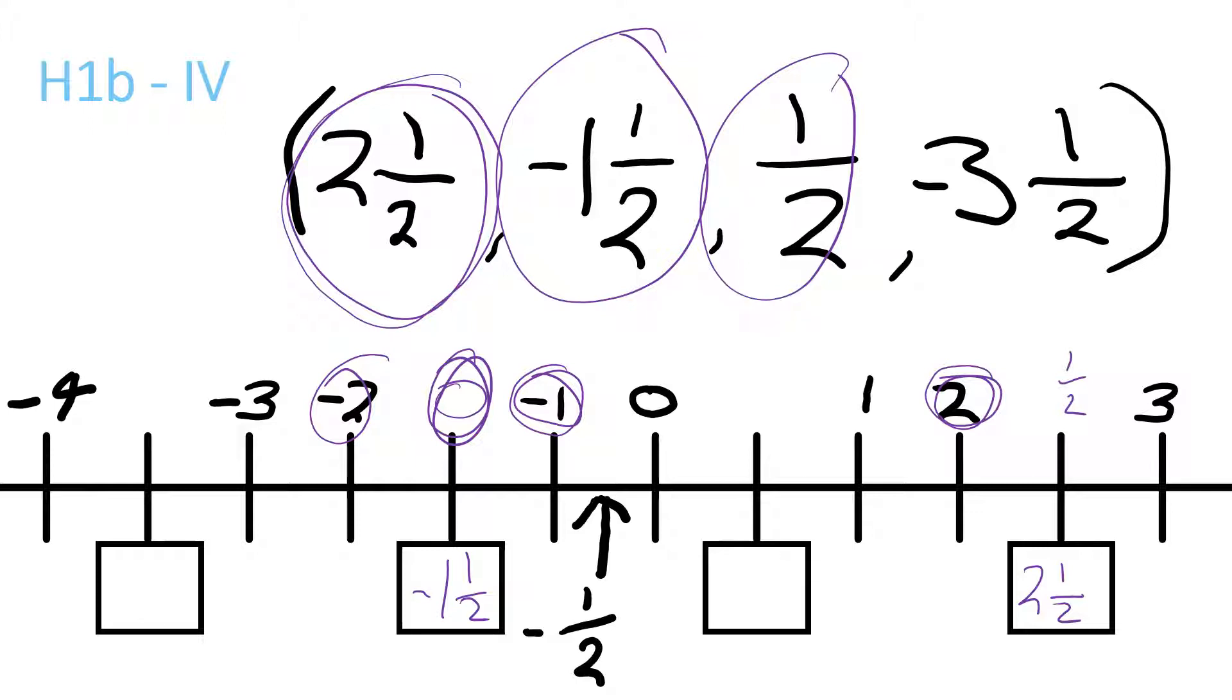A half would be here because half of one, you got to find one first and zero in between is a half. And then here we have negative four, and then the last one here would